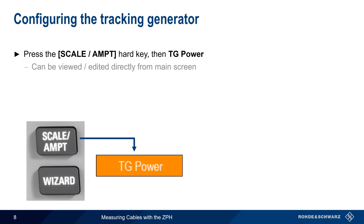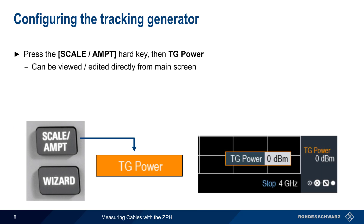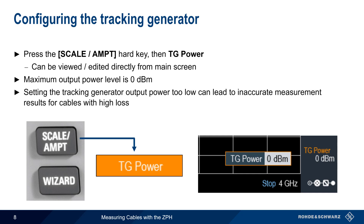The tracking generator or signal source is configured by pressing the Scale Amplitude Hard key and then selecting TG Power from the menu. Note that the tracking generator power can also be viewed and edited directly from the main ZPH screen. The maximum configurable output power is 0 dBm. Care should be taken not to set the tracking generator output power too low, since this can lead to inaccurate measurement results for cables with high loss.